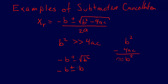I'm going to put a squiggle on top of b just because it's not actually b — it's approximately b, because we approximated. So we have negative b plus or minus b-tilde. We're going to run into subtractive cancellation because in one case we have negative b plus b, and both are approximately equal — that's where we run into the problem of subtractive cancellation.